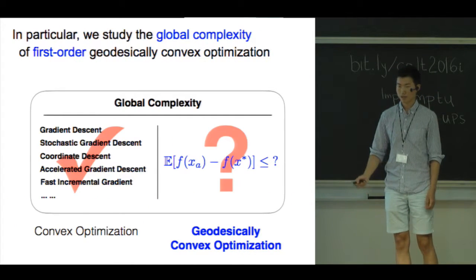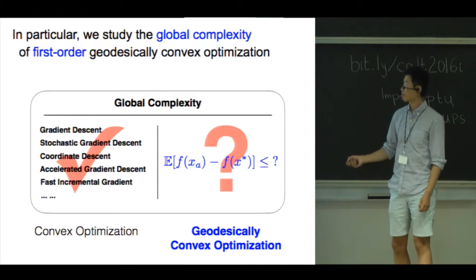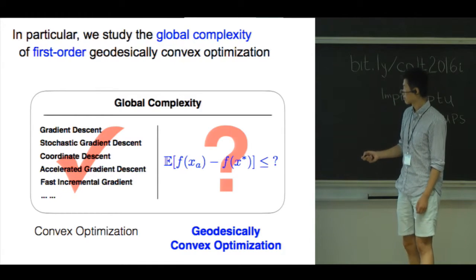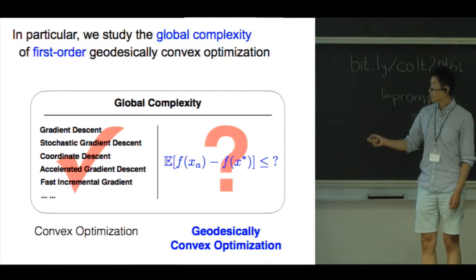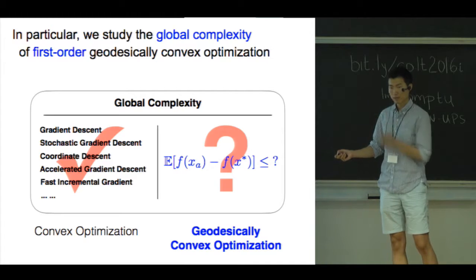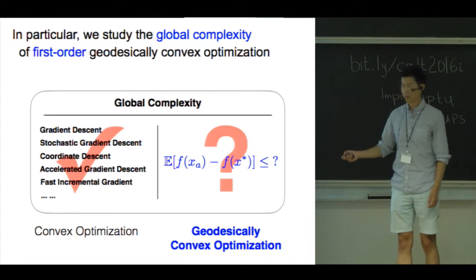In particular, we are interested in the global complexity of first-order geodesically convex optimization on Riemannian manifolds. Such global complexity results are a major part of the great success of convex optimization theory, while they remain almost completely missing in nonlinear space.